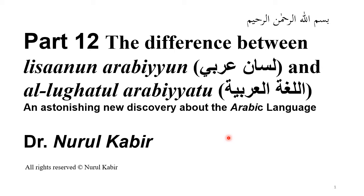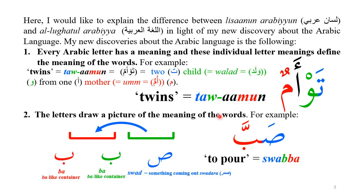As-salamu alaykum everybody. I'm going to discuss the difference between Lisanun Arabian and Al-Lugat al-Arabiya, which is very important for many people. I will discuss this from the perspective of my new discovery about the Arabic language. I have already shown you that I believe the divine language is called Lisanun Arabian, mentioned in the Quran, as opposed to Al-Lugat al-Arabiya — a phrase not mentioned in the Quran. I'd like to prove that Lisanun Arabian is the divine language.